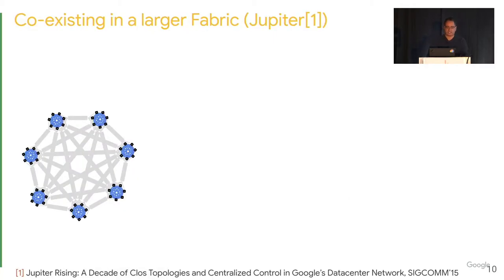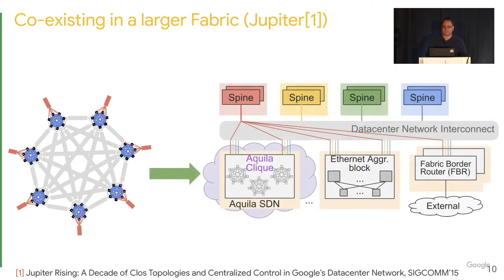With this GNET Dragonfly, how can we connect it to the rest of our data center, Jupyter? We added Ethernet links to each TIN that connect to the rest of the data center. This way, a machine on the Aquila clique can talk to the rest of the data center using Ethernet.